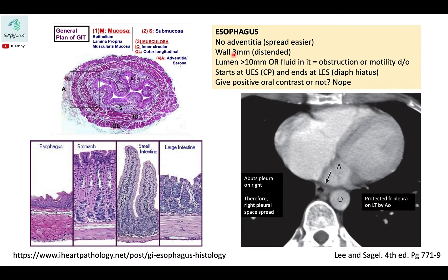The esophageal wall should measure only three millimeters when distended. When you see a lumen more than 10 millimeters or fluid within it, consider an obstruction or motility disorder. The esophagus starts at the upper esophageal sphincter at the cricopharyngeus muscle and ends at the lower esophageal sphincter at the diaphragmatic hiatus — regions where foreign bodies can lodge. We do not give positive oral contrast because it may obscure vessels in the submucosal region.